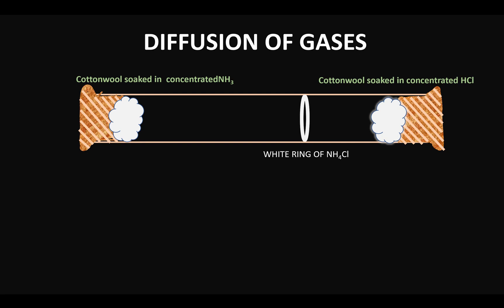then why has it formed towards the side which has the cotton wool soaked in concentrated hydrochloric acid? We need to find answers to these two questions, and for that I'm going to show you what kind of process happens that leads to the formation of this white ring.